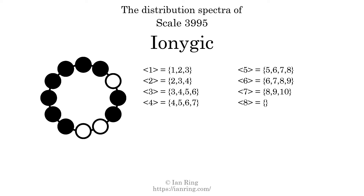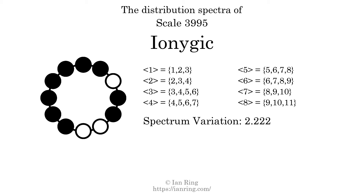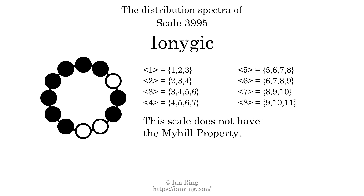And finally, the generic interval of 8 scale steps comes in 3 different specific interval sizes: 9 semitones, 10 semitones, and 11 semitones. The spectrum width of this generic interval is 2. The spectrum variation is the sum of all the widths divided by the number of tones. The spectrum variation of this scale is 2.222. Since the variation is greater than 0, this indicates that the scale is not perfectly even. The highest spectrum width is 3. Since this is greater than 1, we know that this scale is not maximally even. If every spectrum has exactly 2 specific intervals, we call that the Myhill property. This scale does not have the Myhill property.